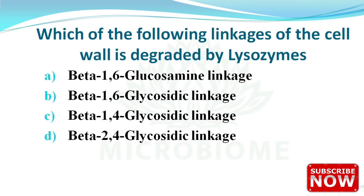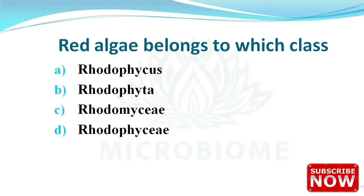Next: which linkage of the cell wall is degraded by lysozyme? The options are beta-1,6 glucosamine linkage, beta-1,6 glycosidic linkage, beta-1,4 glycosidic linkage, and beta-2,4 glycosidic linkage. The right answer is option C — beta-1,4 glycosidic linkage.